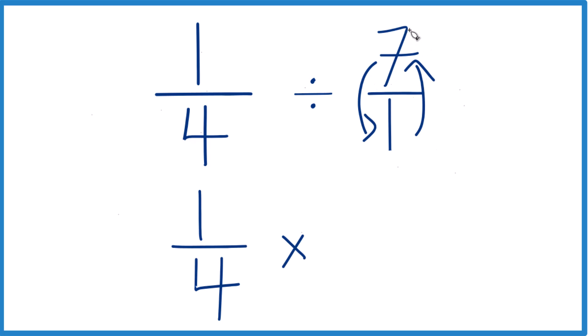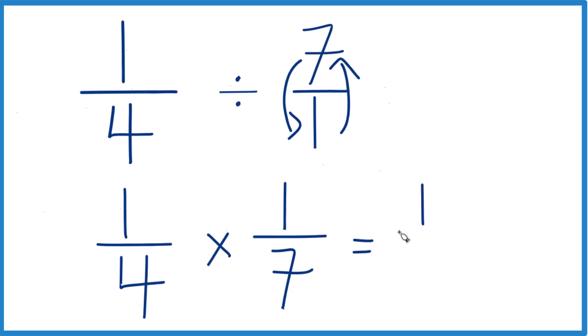So one goes up top, seven goes on the bottom, that's one-seventh, and we're just going to multiply. One times one, that's one, and then four times seven is twenty-eight.